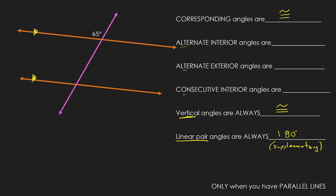If you know corresponding angles of parallel lines are congruent, you can find everything else. If I know that angle is 65°, this angle here is also 65° because it's a vertical angle. A corresponding angle to that would be right there, so that angle is also 65° because it is corresponding. And this one can also be 65° for one of two reasons: it can be vertical to that, or it could be corresponding to that.